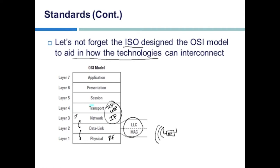The model was designed so that we could rip any one of these layers out and replace it with a new one. For example, at the network layer we focused on IP version 4 for a very long time, and then we replaced it with IP version 6. No problem, as long as it can talk to the transport layer and data link layer. That's the beauty of this open model rather than having companies create proprietary protocols.